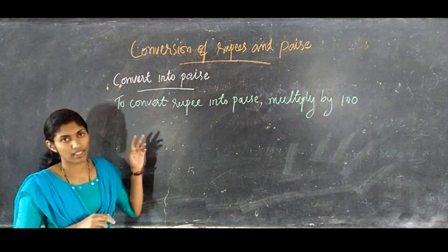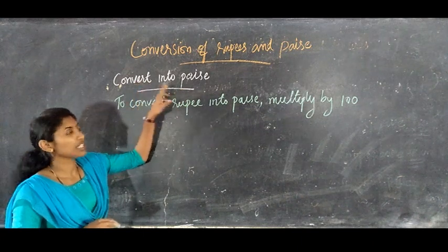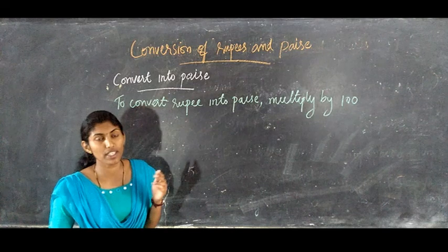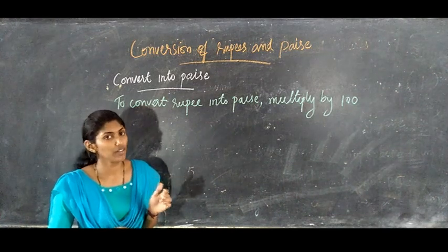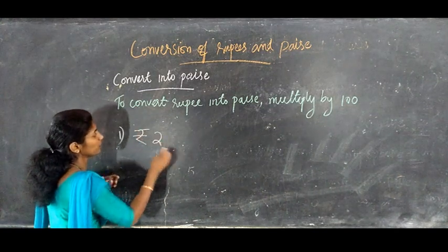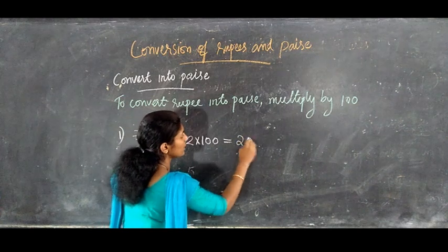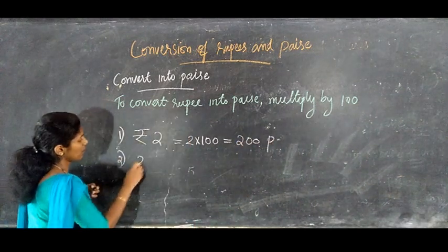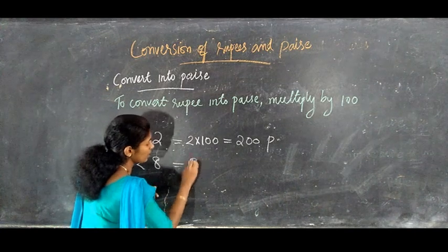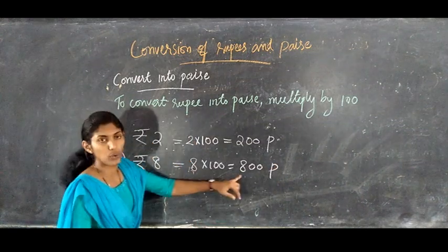Next topic: conversion of rupees and paisa. First, converting into paisa. To convert rupees into paisa, multiply by 100 — in other words, place two zeros to the right of the amount given in rupees. For example, rupees 2 — we do 2 into 100, which equals 200 paisa. Rupees 8 — 8 into 100 equals 800 paisa, so rupees 8 equals 800 paisa. Rupees 12 — 12 into 100 equals 1200 paisa, so rupees 12 equals 1200 paisa.